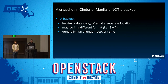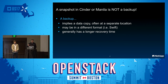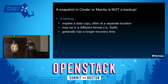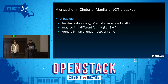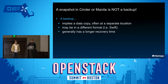A snapshot is not the same thing as a backup — we should not conflate the two. A backup typically implies a full copy held at a different location for greater resiliency, and may even be in a different format. For example, Cinder has a backup service that can back up to a Swift interface, a storage grid, or an NFS share. Because of the separate location and different format, restoring from a backup typically takes much longer. By contrast, snapshots should be very fast, if not instantaneous.